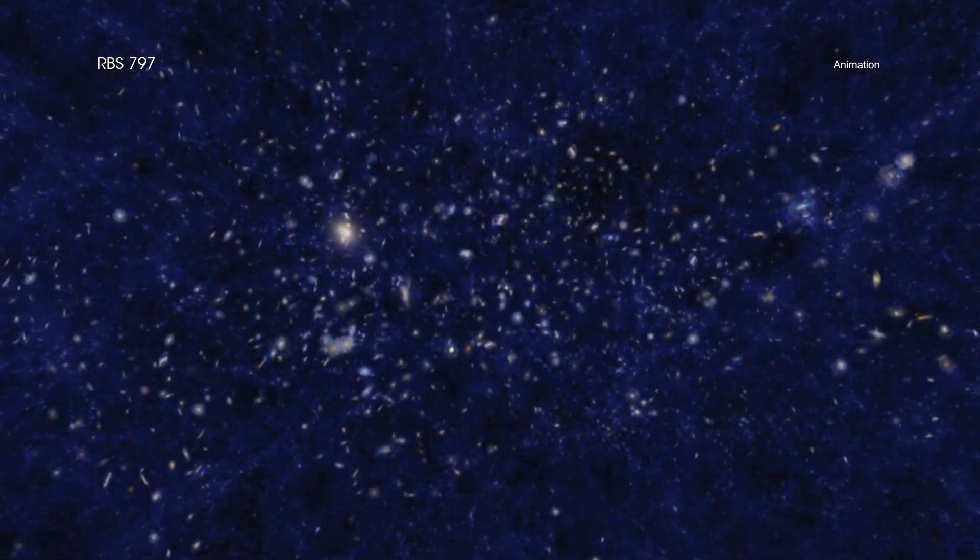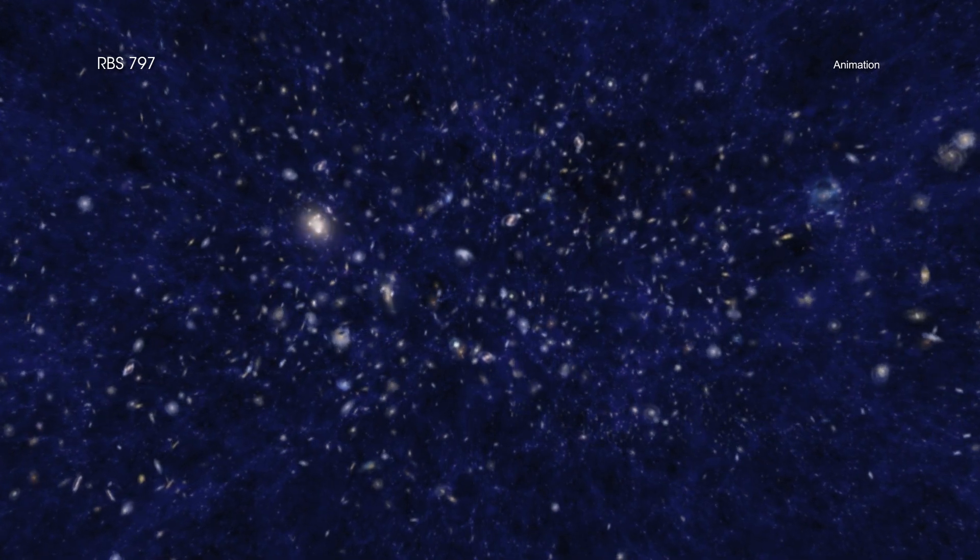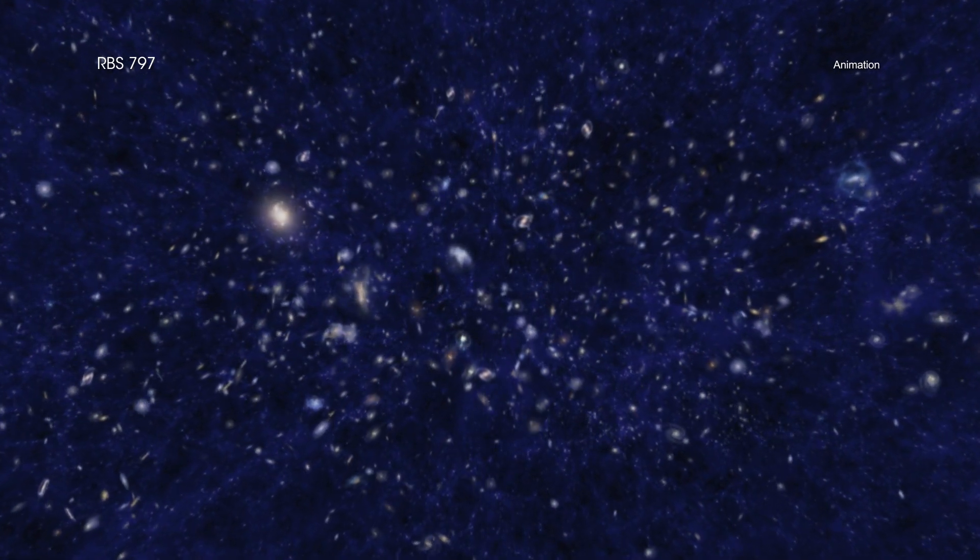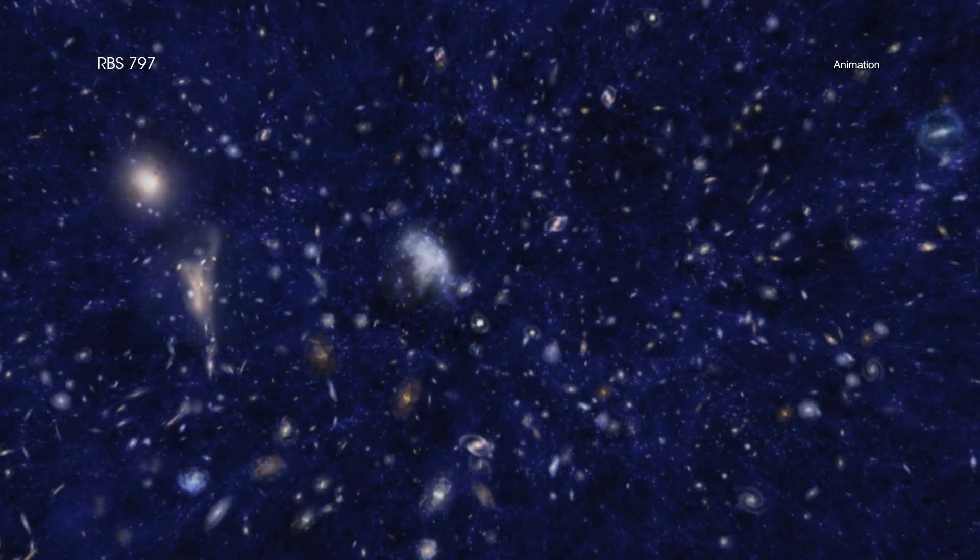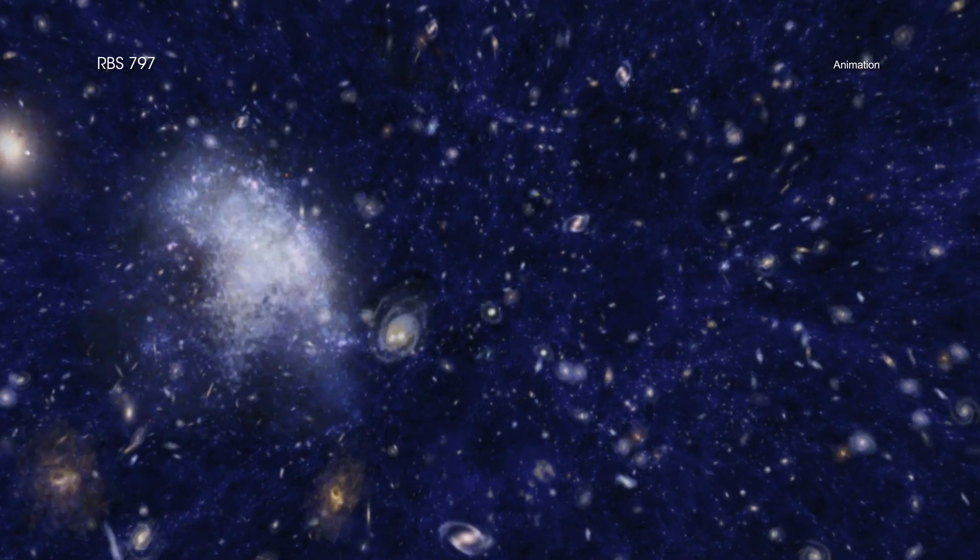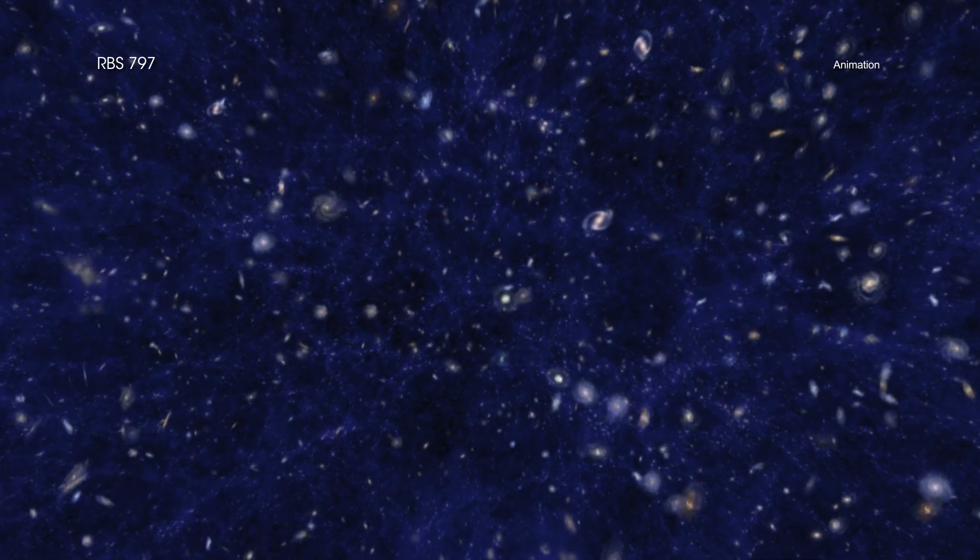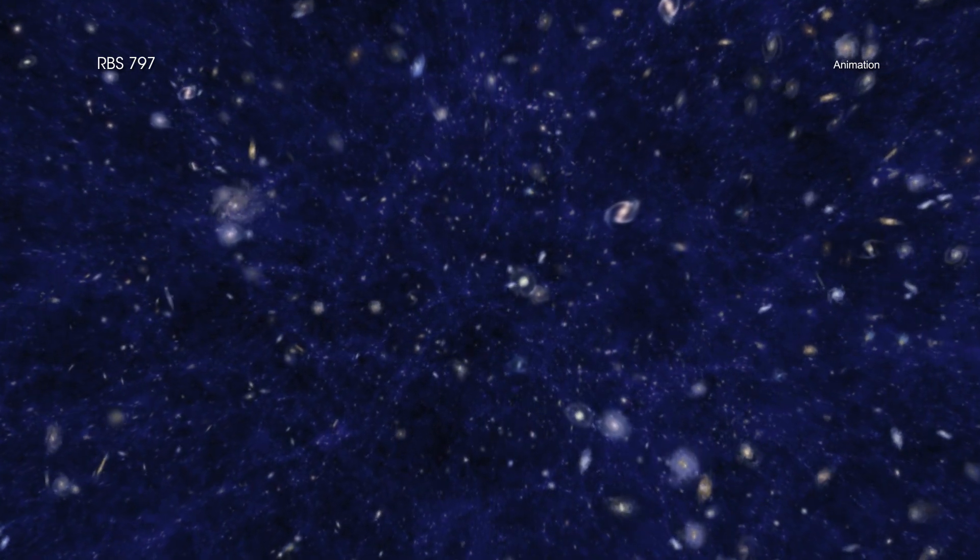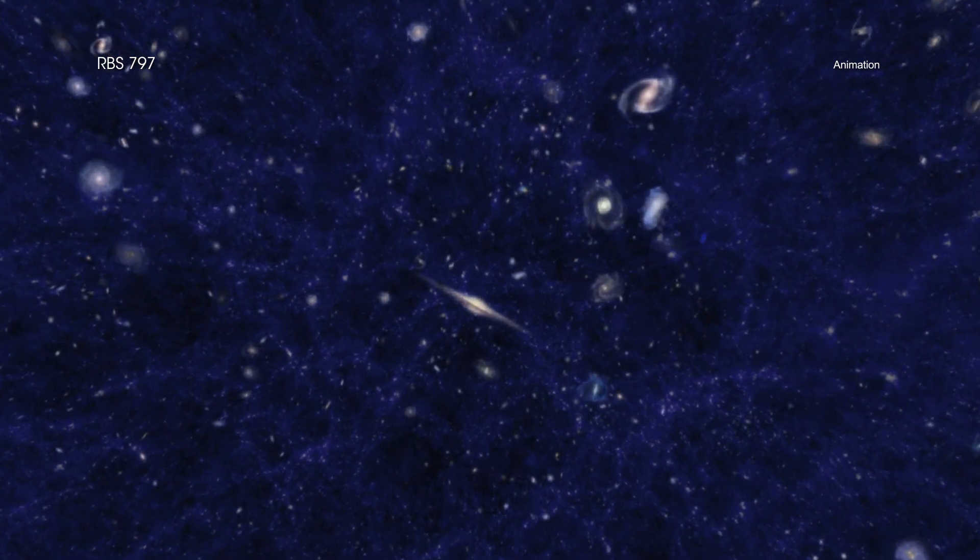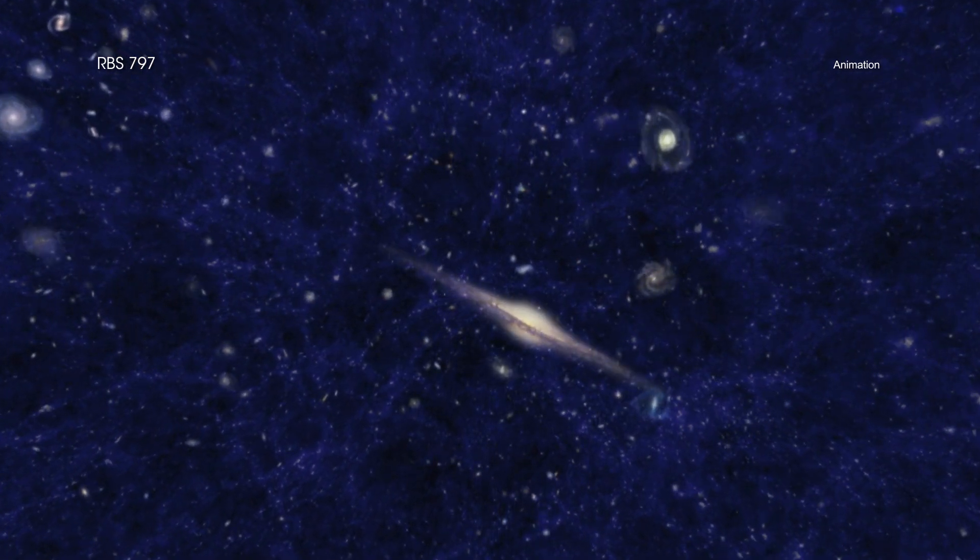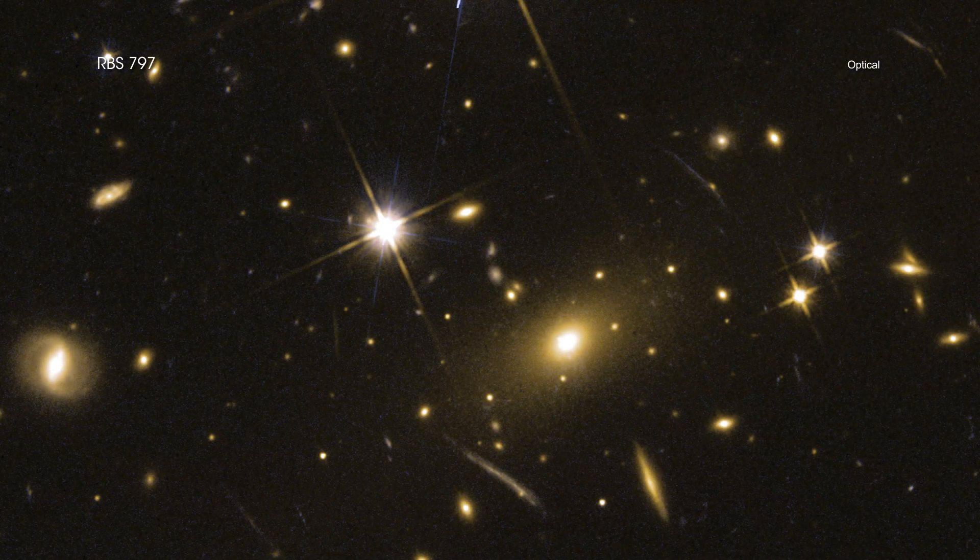Galaxy clusters are the largest clusters in the universe held together by gravity. They are a mixture of hundreds or even thousands of individual galaxies, enormous amounts of hot gas, and unseen dark matter. The hot gas that pervades clusters contains much more mass than the galaxies themselves and glows brightly in X-ray light that Chandra detects. An enormous galaxy is usually found at the center of a cluster.